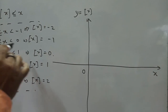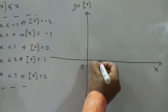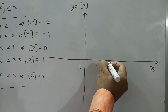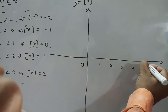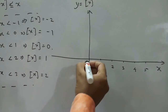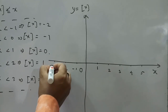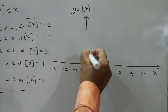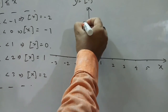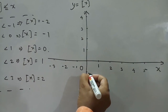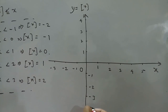Now if you mark values: from 0 to 1, this is 1, this is 2, this is 3, this is 4, this is 5 on the positive X side. On the negative side, this is -1, -2, -3. Similarly on the Y-axis: 1, 2, 3, 4, and on the negative Y side: -1, -2.